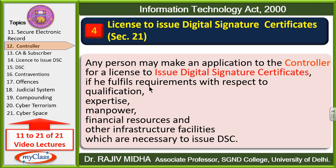jo expertise required hai, us vyakti ya us company ke paas woh saari expertise hai, manpower hai, financial resources hai, aur other infrastructure facilities like hardware, software aur secure procedure ke saare controls hain — jo ki us vyakti ya us company ke paas hain jo digital signature certificate ko issue karna chahta hai — woh vyakti controller ko ek application laga sakta hai ki hamein license diya jaaye digital signature certificate ko issue karne ka. Lekin yeh usi vyakti ya company ko diya jaayega jo qualification, expertise, manpower, financial resources ya other infrastructure facilities ko rakhta hai jo digital signature certificate ko issue karne ke liye zaroori hai.